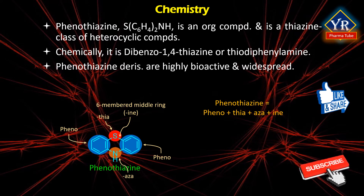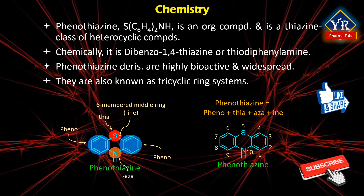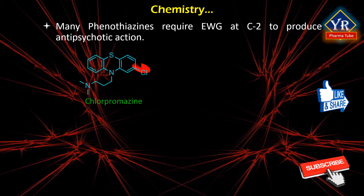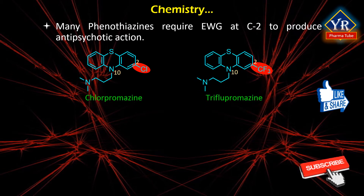This heterocyclic ring is fused with two terminal benzene or phenyl rings to form phenothiazine. Phenothiazine derivatives are highly bioactive compounds with widespread use and rich history. They have a tricyclic ring system, and for numbering the compound, sulfur should be given the least possible number - thus sulfur gets the fifth position while nitrogen gets the tenth position. Many phenothiazines require an electron withdrawing group at the second position to produce their antipsychotic action, such as chloro- or trifluoromethyl groups.